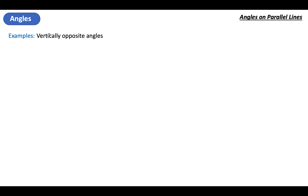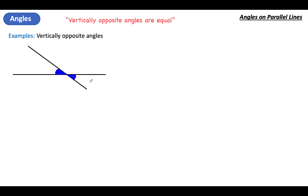One quick one we're going to look at first before we get onto the parallel lines is vertically opposite angles, and these come when you've got two lines crossing. We've got one angle here — what we can say is the angle opposite to it will be equal. It's really important that you remember these sentences, these are little quotes we need to use when giving reasons. In this case I would say that angle is equal to that one because vertically opposite angles are equal.